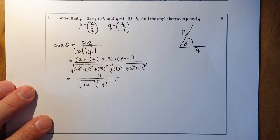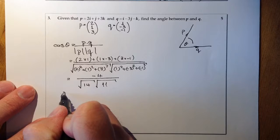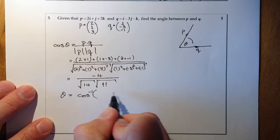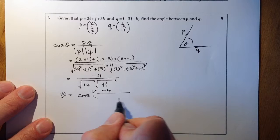So from there, I've been working out what cosine theta is. From here, I'm going to work out what theta is on the calculator. So it's going to be the inverse cosine of minus 4.